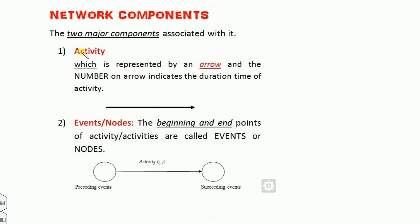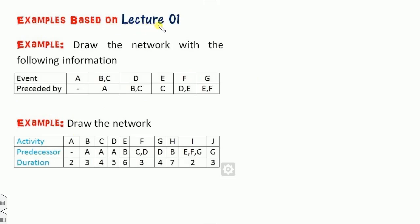Let me quickly recall what we studied in the last lecture. Any network consists of two components: activities and nodes. Activities are always denoted with an arrow sign. If I represent a value of 4, this means the length, time, or duration of that activity. The starting and ending points are called events or nodes. The node where an activity starts is the preceding node, and where it terminates is the succeeding node.